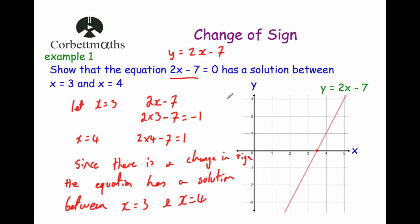In an exam, if you've been asked to show that an equation has a solution between two values, you have to show that you're substituting those values into the side of the equation that isn't equal to 0, and you must show there's a change of sign. There are situations where a change of sign doesn't work, and I'll show you those at the end of this video.